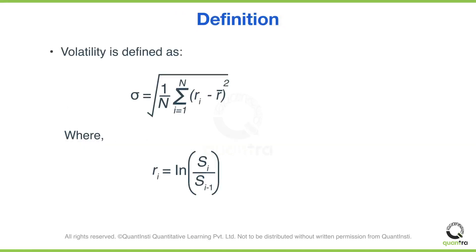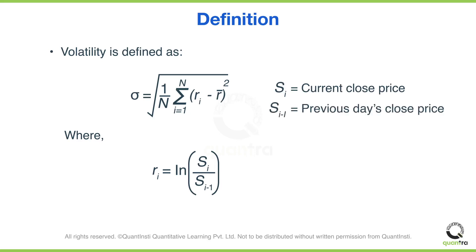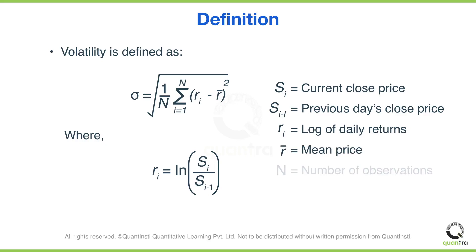Volatility is defined as the standard deviation of the log returns of the stock. Here, SI is the current close price and SI-1 is the previous day's close price. RI is the log of daily returns, and R-bar is the mean return over the observed period. N is the number of observations.